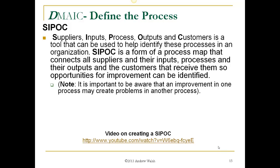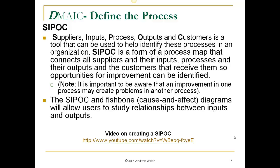Another type of process mapping is SIPOC, which stands for Suppliers, Inputs, Process, Outputs, and Customers. It's a tool used to identify these processes within an organization, often looking at internal customers. Within a company, various departments serve other departments — for instance, manufacturing may make product that goes to packaging, so packaging is a customer of manufacturing. SIPOC maps who is sending what to where. It's also important to be aware that an improvement in one process may create problems in another, such as faster manufacturing causing pileups in packaging.